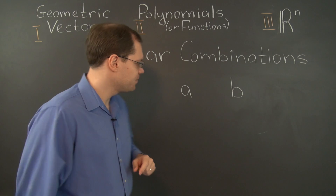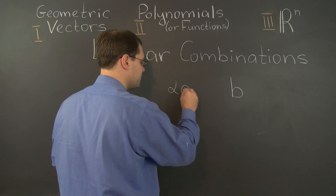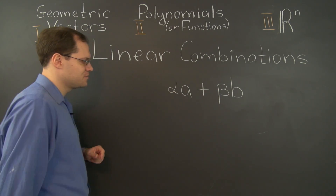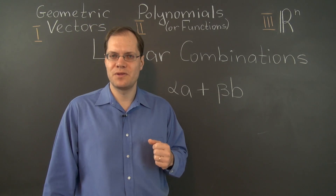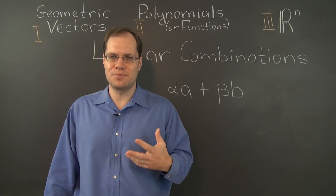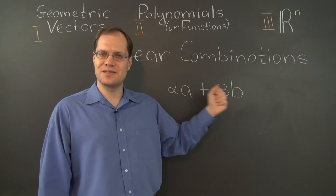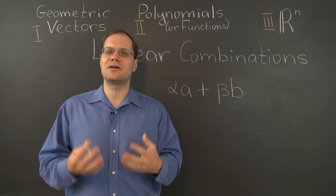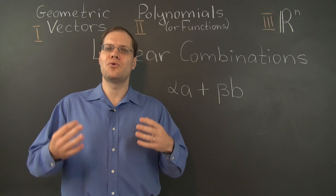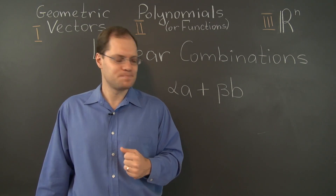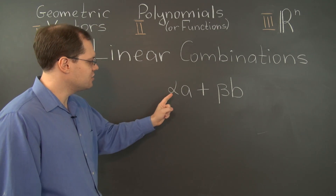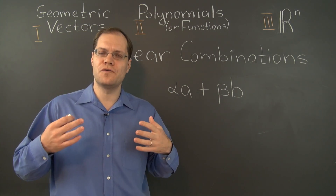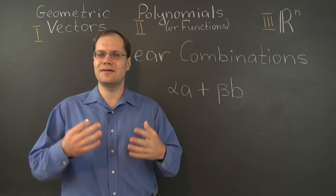Let's do both. Let's multiply each one of these vectors by a different number, and then add the results together. So we have combined addition with multiplication by numbers. This kind of expression is called a linear combination, precisely because it combines addition with multiplication by numbers. The two numbers in this linear combination, alpha and beta, are known as the coefficients of the linear combination.